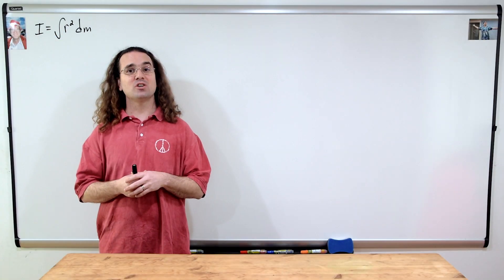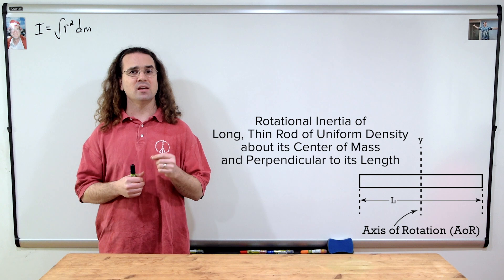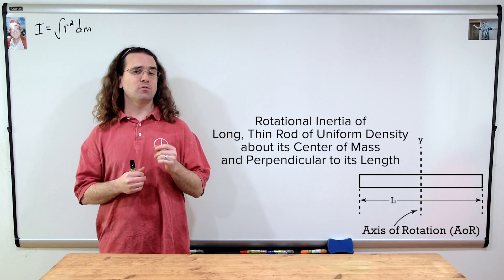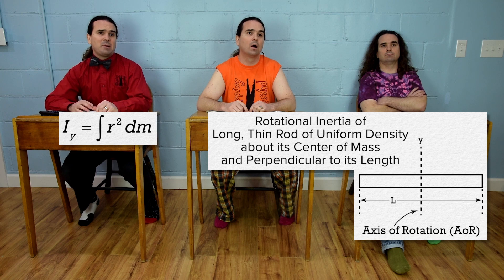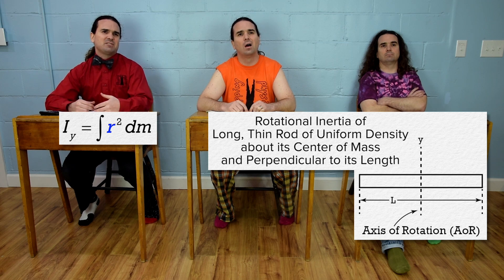Billy, please solve for the rotational inertia of a long, thin rod of uniform density about an axis perpendicular to its length and through its center of mass. The rotational inertia about the y-axis equals the integral of r-squared with respect to mass. That's weird — what does r have to do with mass?